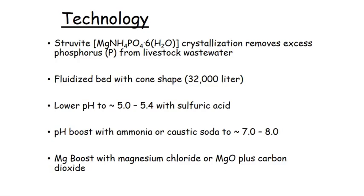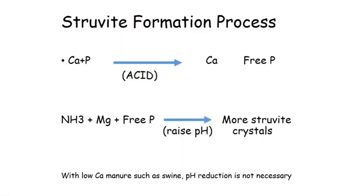The current system we use for the mobile system is 32,000 liters. What we do is lower the pH with our acid down to about 5.0 to 5.4, then boost the pH with ammonia or caustic soda, and also provide some magnesium to make sure we've got enough for magnesium ammonium phosphate formation. We typically add that as magnesium chloride, but you can also use magnesium oxide.